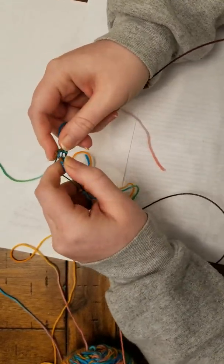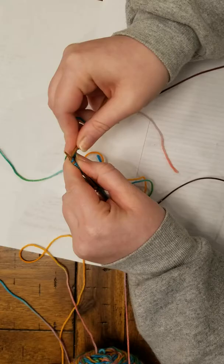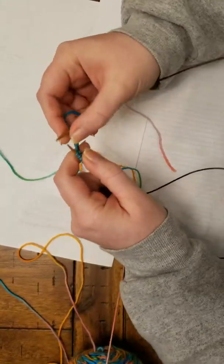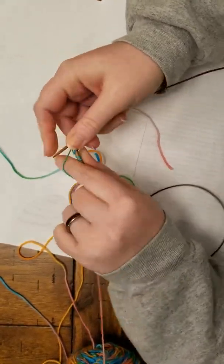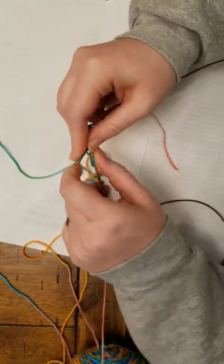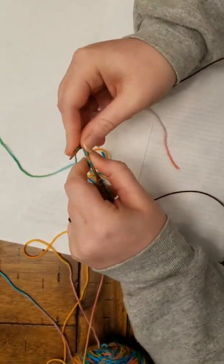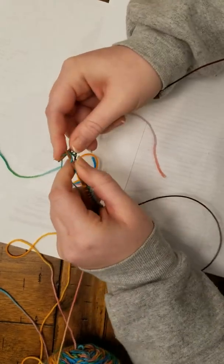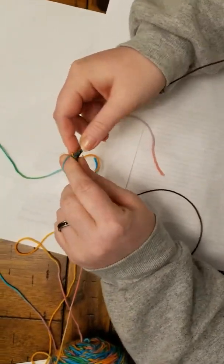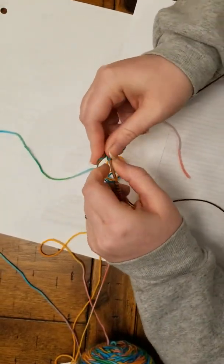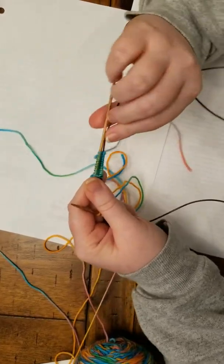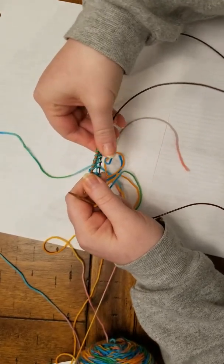The first round you're just going to knit, there's no increases on the first round. It will be a little tight, that's pretty normal. You want it to be nice and tight, it makes a prettier sock toe. Once I finish with that first one, I'm just going to move it down to the right.